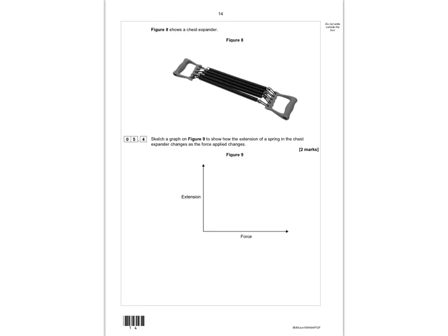Figure 8 shows a chest expander. Sketch a graph on figure 9 showing how extension changes as the force applied changes. For a spring, this should be a linear relationship — a straight line through the origin, showing they are directly proportional. You get one mark for a straight diagonal line and a second mark for that line passing through the origin.